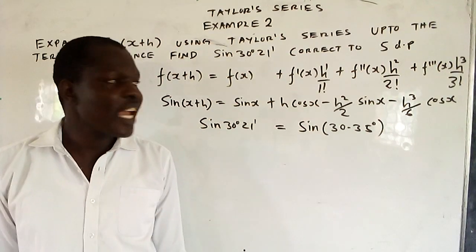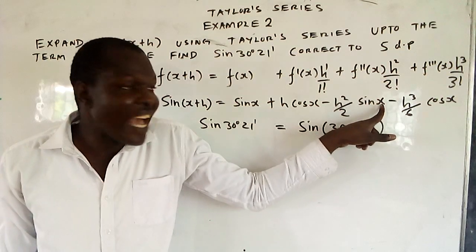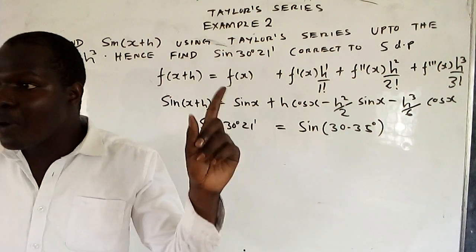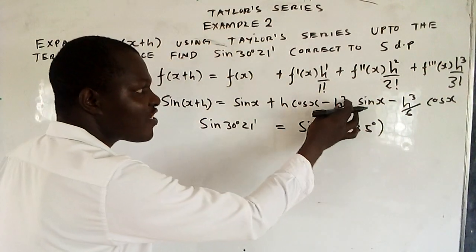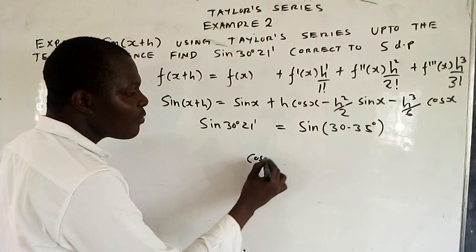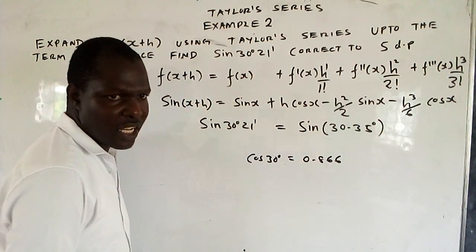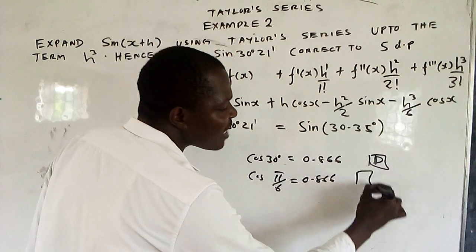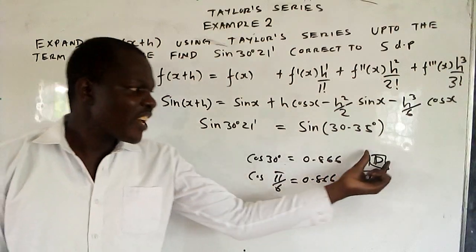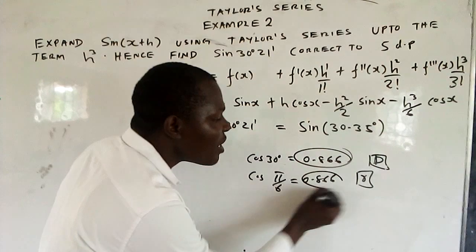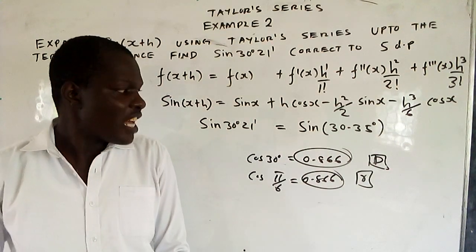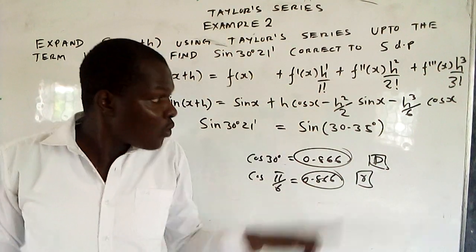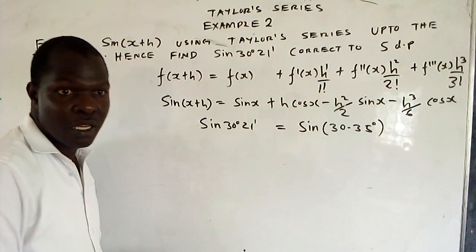Remember, you cannot use degrees here. When working with power series, everything must be in radians. The values of cos x and sine x will be in radians, so h must also be in radians. For example, cos 30 degrees and cos pi over 6 both give 0.866, so the final answer is always in radians. You cannot work with degrees — degrees must be converted into pi radians.